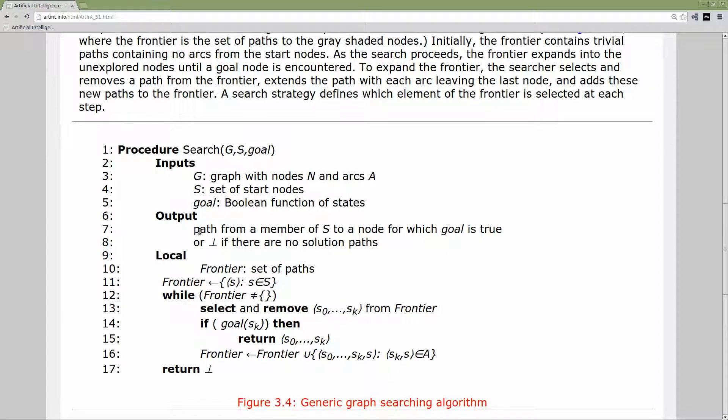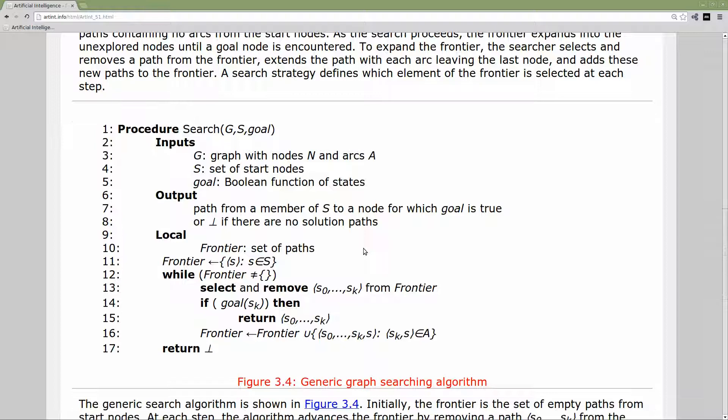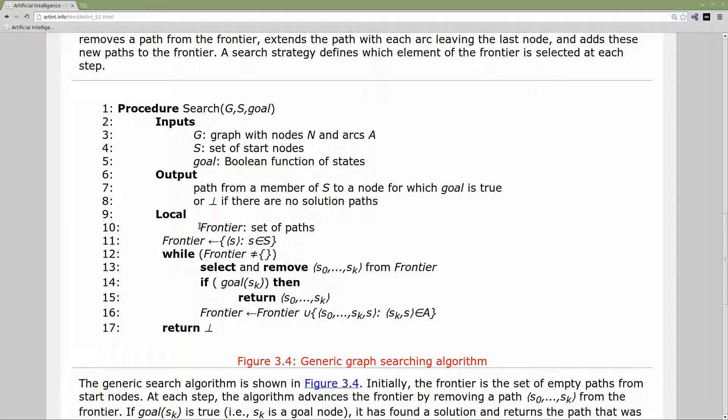Obviously the output is going to be the path, the solution. Then we've got one local variable declared here, the frontier. This starts to look confusing if your set notation is rusty. This is set builder notation. What we have here is the form of the elements in the set, and then a logical condition. This angle bracket notation is how our author indicates a tuple. This is saying that this tuple with s in it is in the set if s is one of the start states.